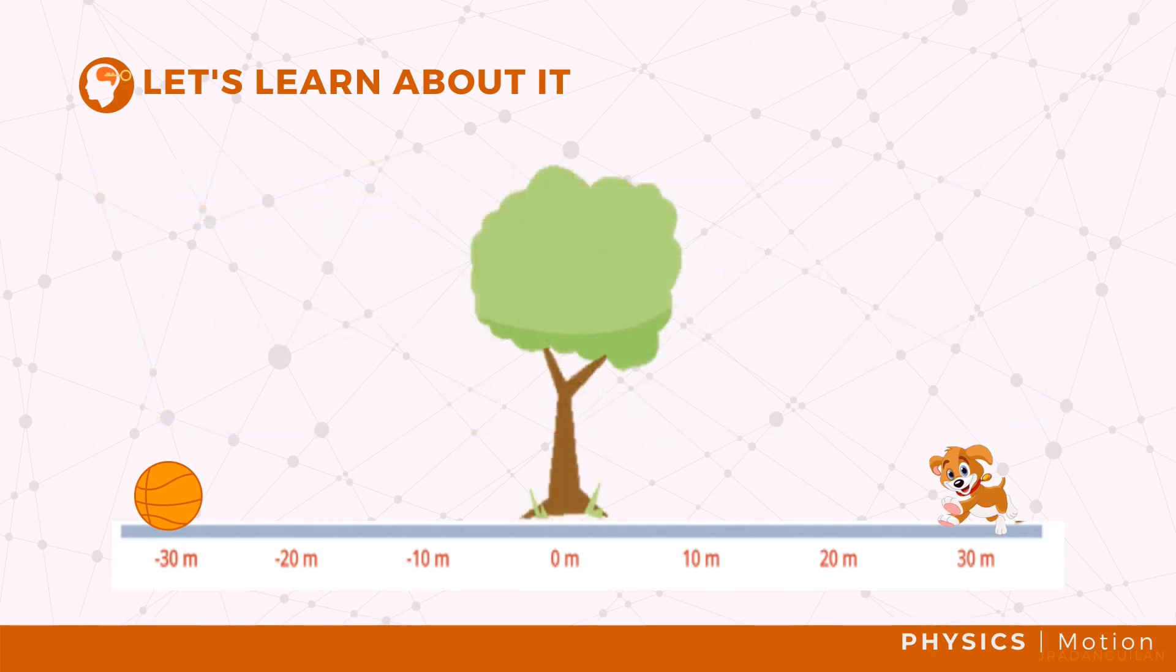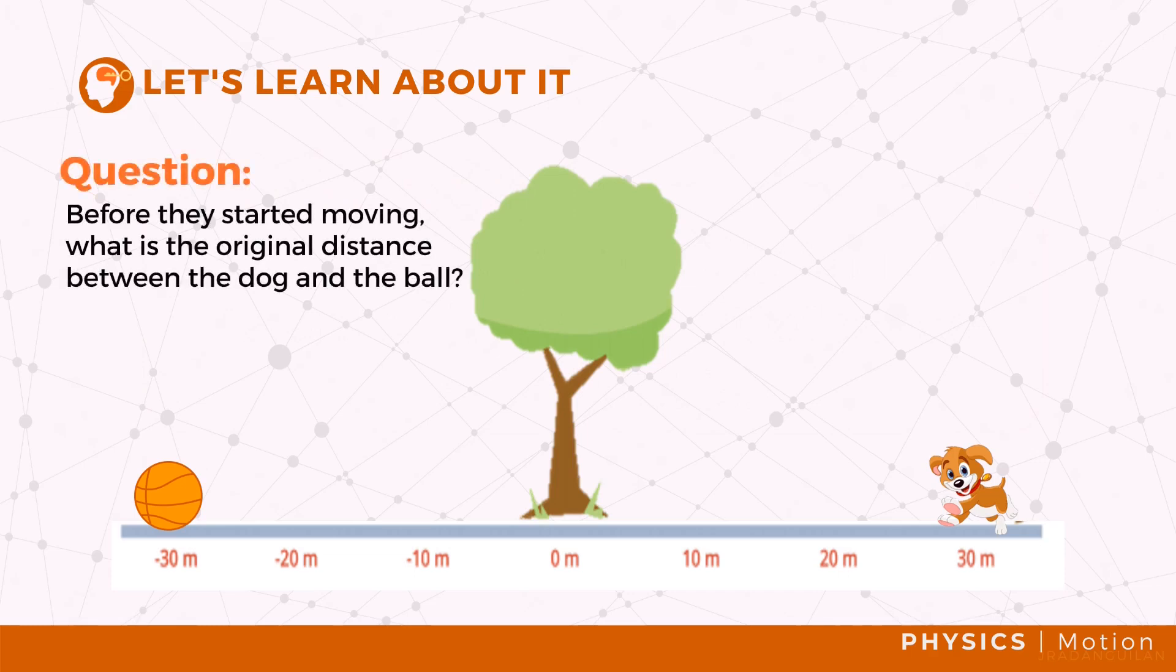Using the same example, what is the original distance between the dog and the ball before they started moving? To solve this, we need to identify first the frame of reference. In this case, it is the dog and the ball.